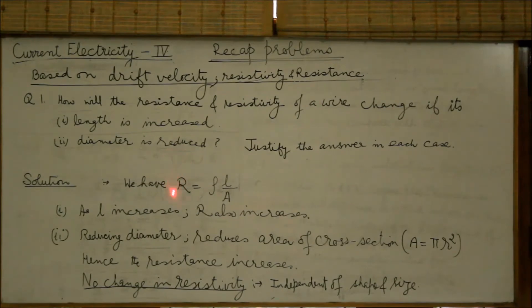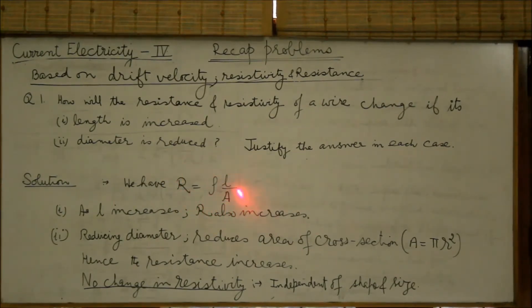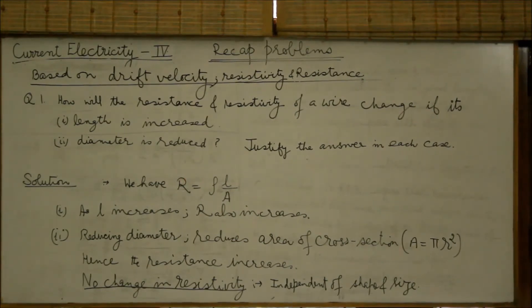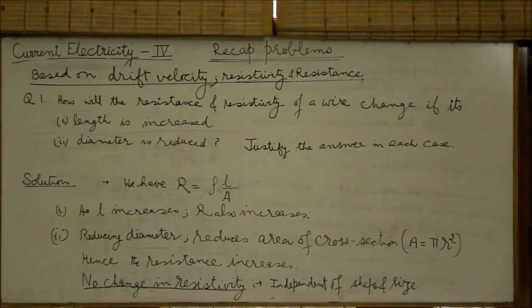We have the relation R equals rho L over A, which gives us the factors on which the resistance depends. Resistance, as we have studied, is proportional to length and inversely proportional to area. It also depends on the nature of the material of the conductor, that is resistivity rho. So we can use this relation to answer this question.